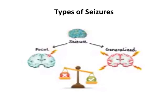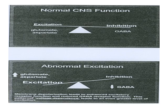Seizures usually occur because of an imbalance of the inhibitory and excitatory processes in the brain. Excitation is carried out by glutamate and aspartate neurotransmitters. Inhibition is carried out by GABA — gamma-aminobutyric acid — the most abundant inhibitory neurotransmitter in the brain. Epilepsy occurs because of too much excitation, meaning glutamatergic neurons are hyperactive, or too little inhibition, meaning GABAergic transmission is suppressed.